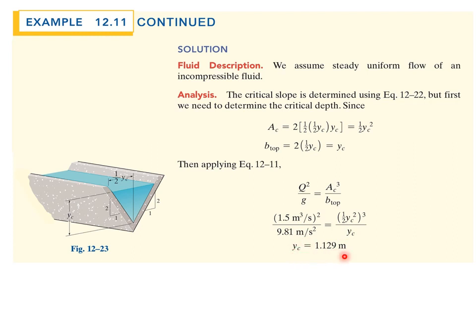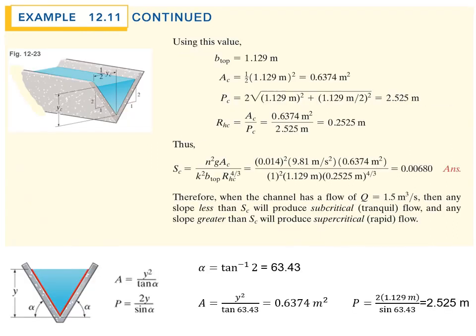Using that value, b top is yc, which is 1.129 meters. The area is one half times that value squared.